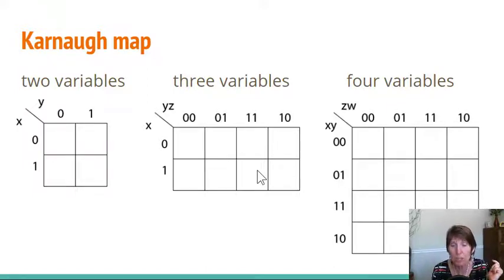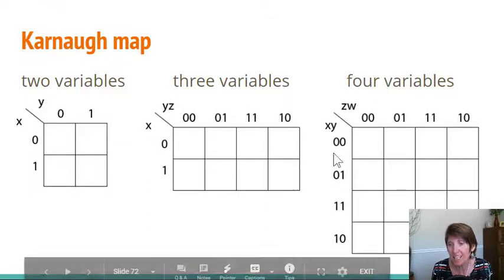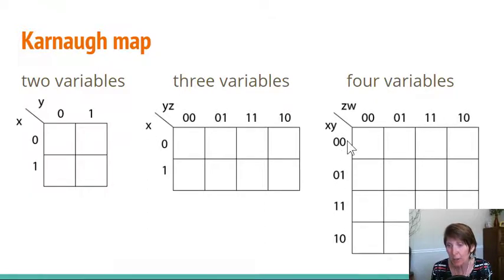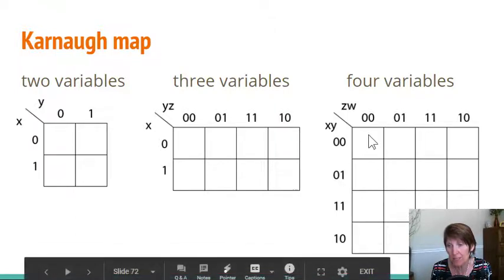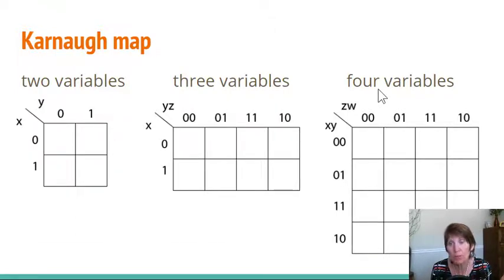When we move to four variables, then each side has two variables. So each has four combinations, and then we end up with 16. And if we had a table with four variables, it would have 16 rows to identify every combination. And so with a Karnaugh map, we get exactly the same number of combinations as we do with a truth table or an input-output table.